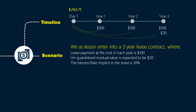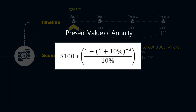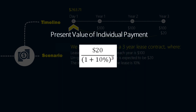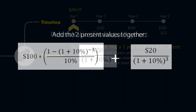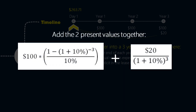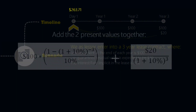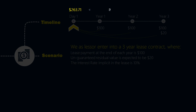How do we get there? We use the annuity formula to present value the stream of $100, and we discount the unguaranteed residual value of $20 individually over 3 years using the discount formula. Add the two together and you get the number. $263.71 is the net investment in the lease.